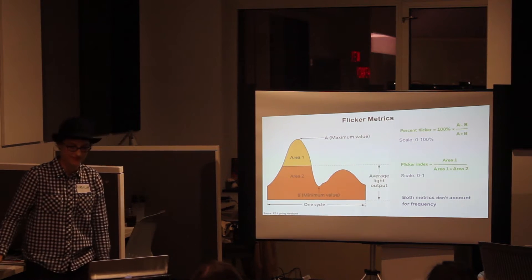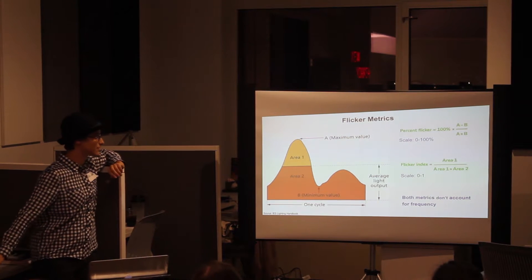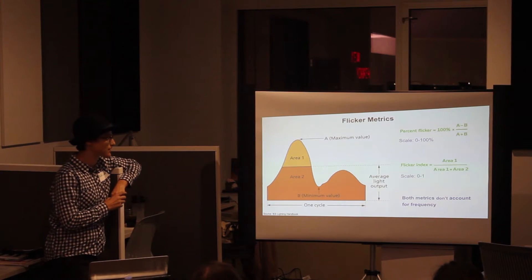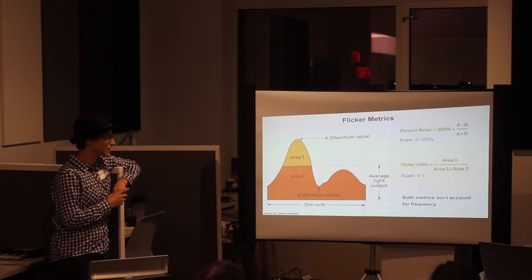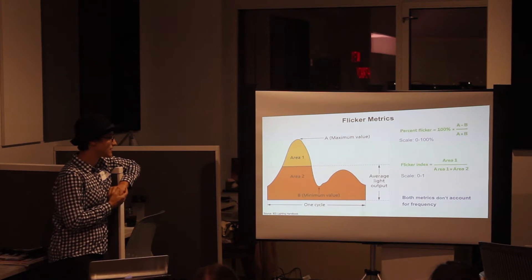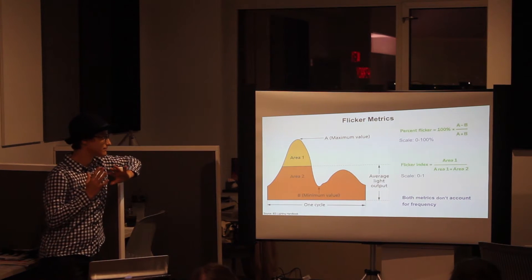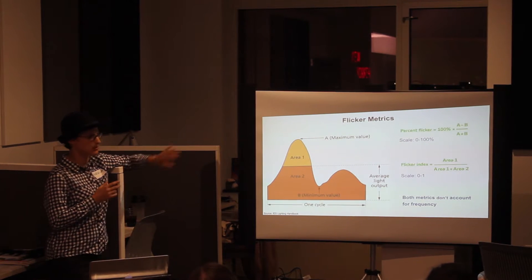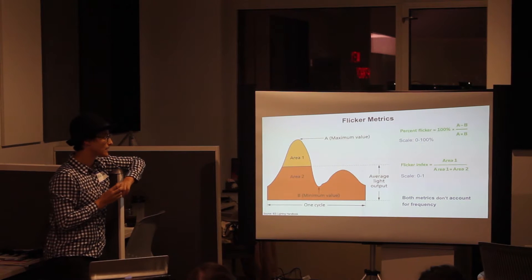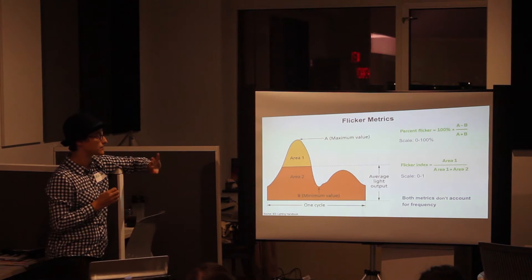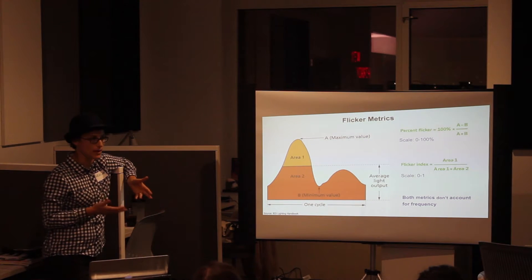Luckily those screens are long gone. There are a few flicker metrics that have been developed — flicker percent and flicker index — and they both look at the waveform. But they're not ideal metrics; neither actually looks at the frequency of the waveform.